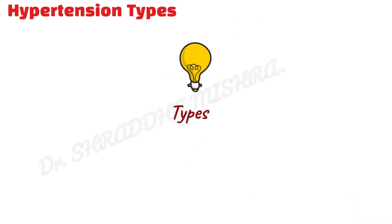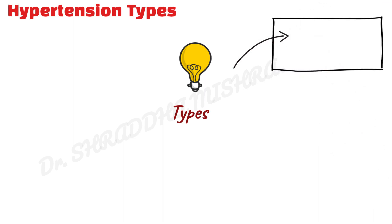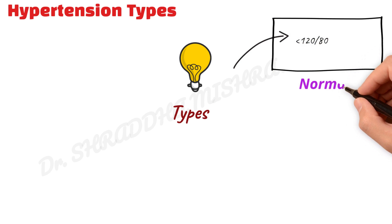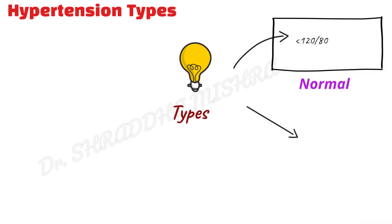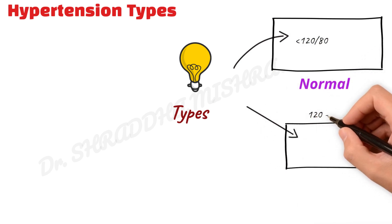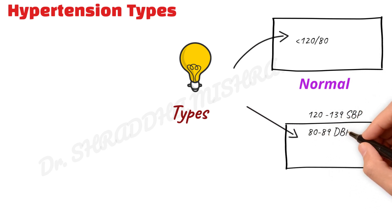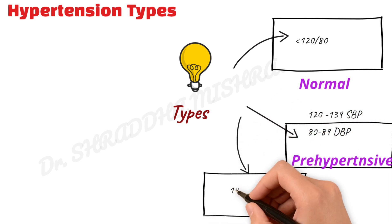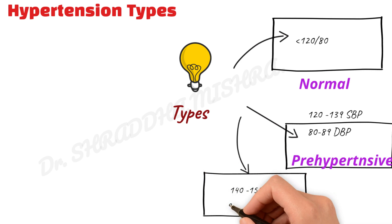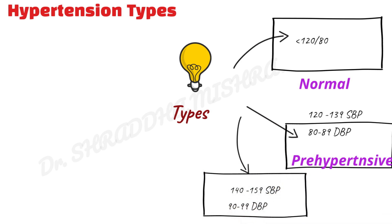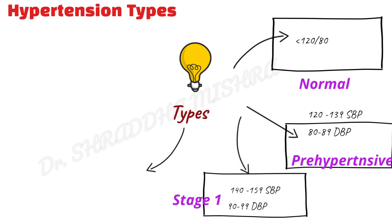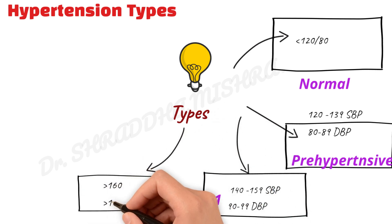The different hypertension types: first is normal, that is blood pressure less than 120 by 80. Second, if the systolic is 120 to 139 and diastolic 80 to 89, then it is pre-hypertensive. Third is stage one, that is 140 to 159 SBP and 90 to 99 DBP.